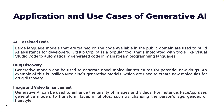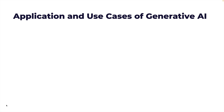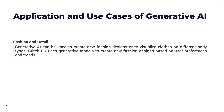Going beyond these are video and image enhancement tools. Gen AI can be used to enhance the quality of images and videos — for instance, FaceApp uses generative models to transform faces in photos, such as changing the person's age, gender, or even hairstyle. Another use case that is becoming very popular is fashion and retail. Generative AI models are used to create new fashion designs or to visualize clothes on different body types. Stitch Fix uses generative models to create new fashion designs based on user preferences and trends.